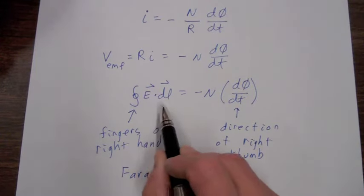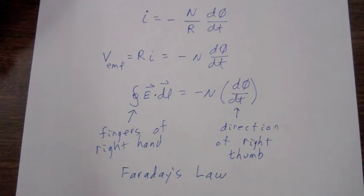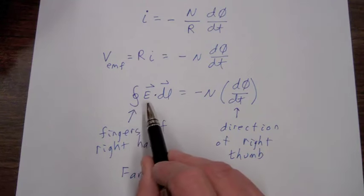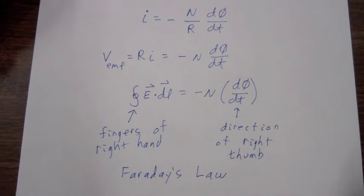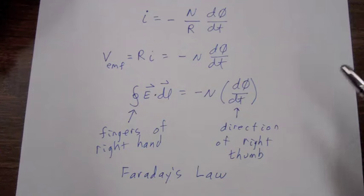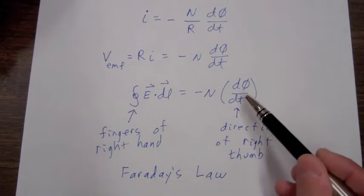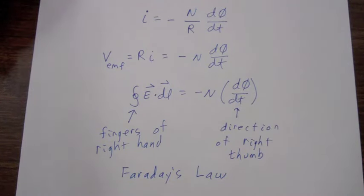The integral of E dot dl around a closed path is the sum of the voltages around that closed path. So Faraday's law tells us that that sum of the voltages around a closed path is not zero if there is a changing flux with respect to time inside that closed path.